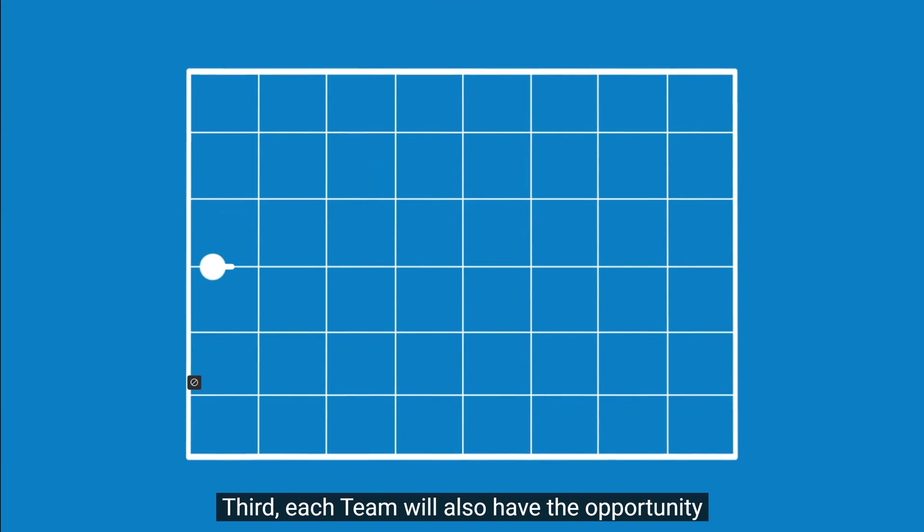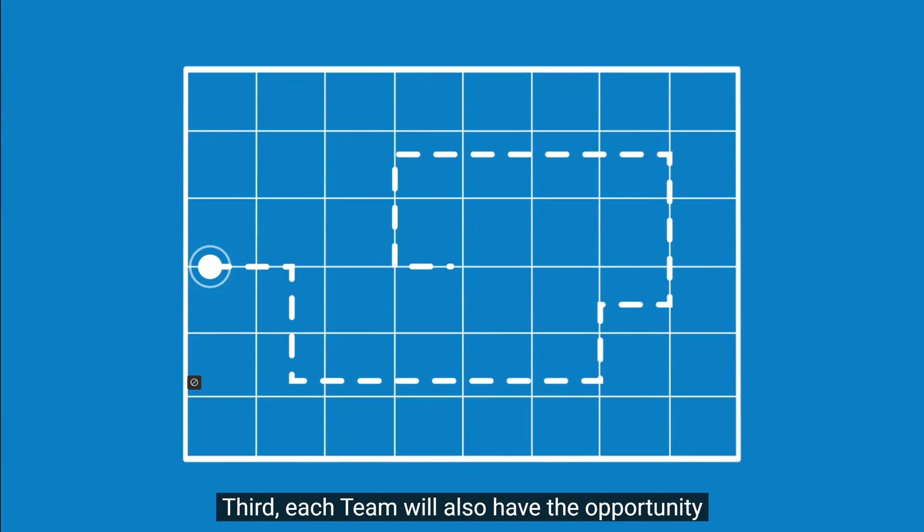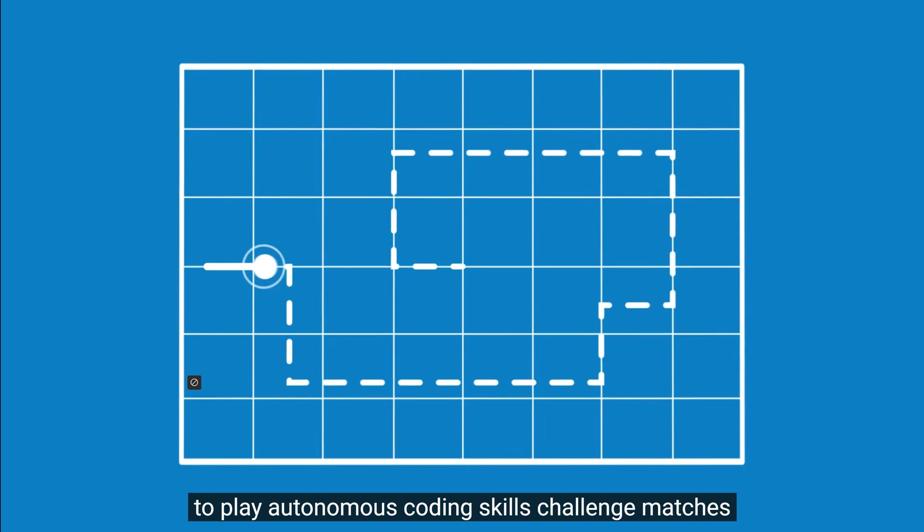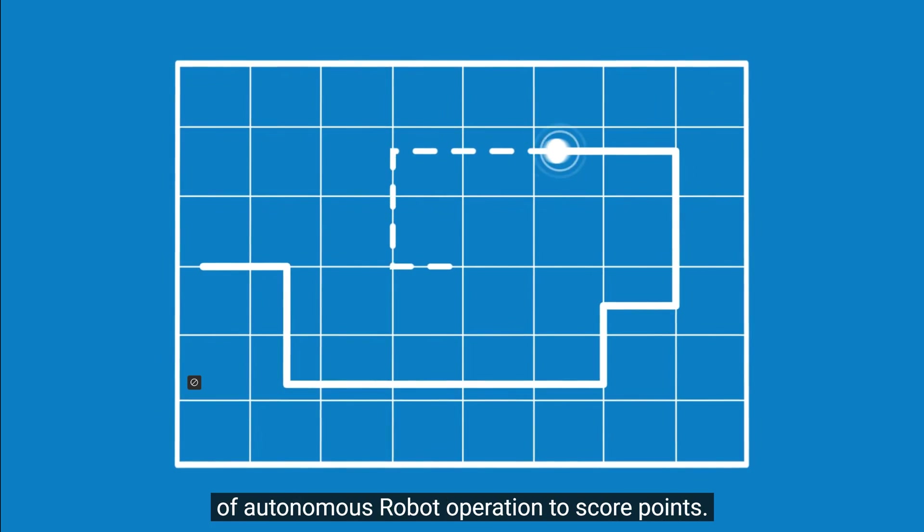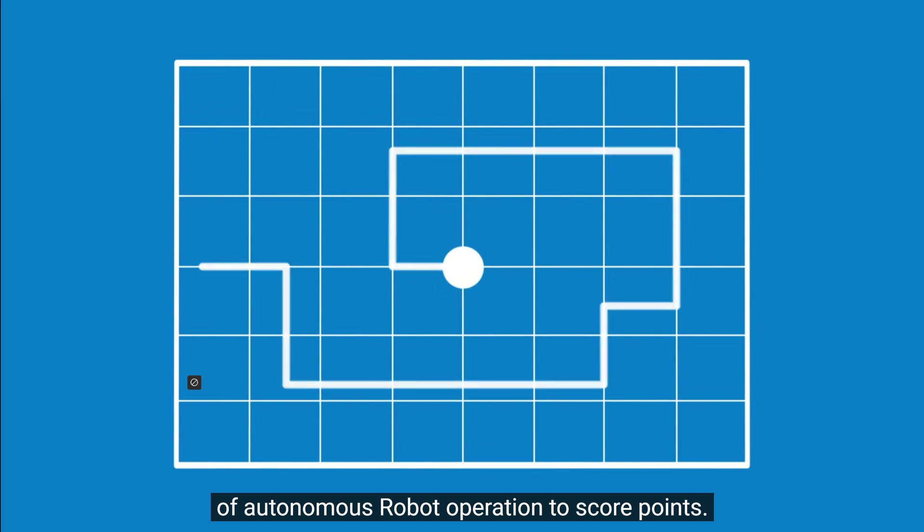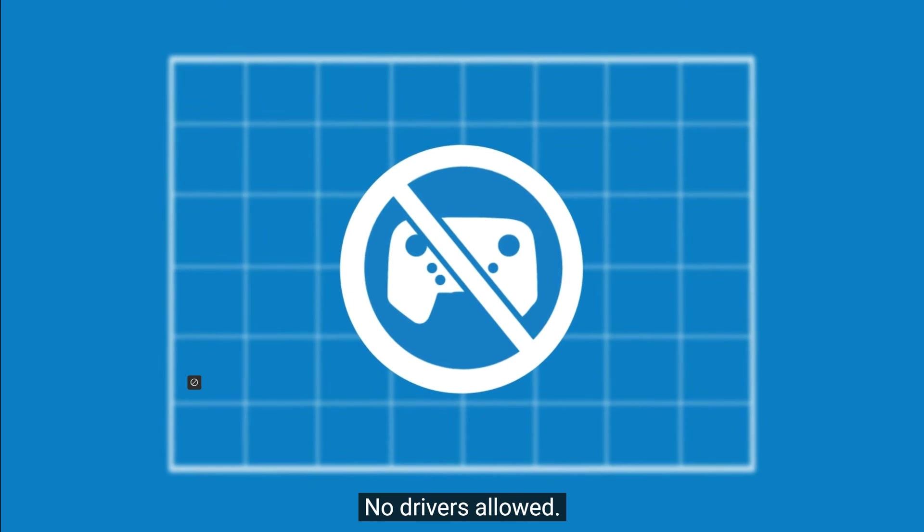Third, each team will also have the opportunity to play autonomous coding skills challenge matches, in which they have 60 seconds of autonomous robot operation to score points. No drivers allowed.